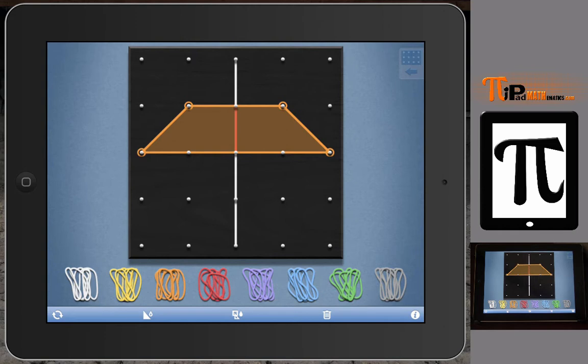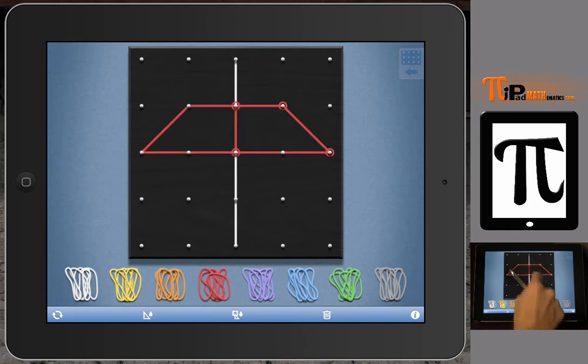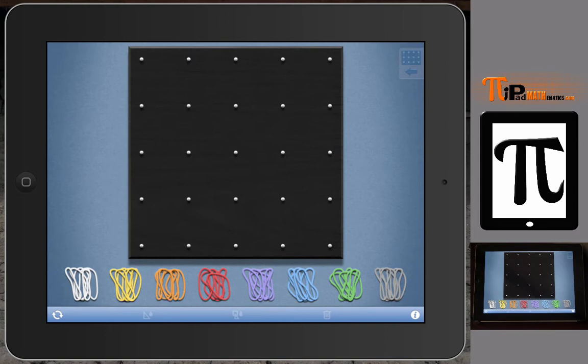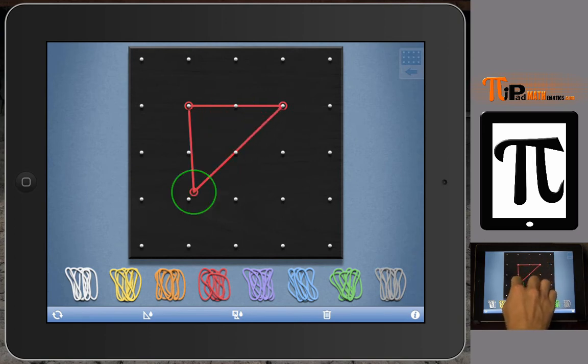What I just did here models reflection of a figure about a line of symmetry. One thing you want to do is have students first understand what it is to be a line of symmetry, a reflection line. Then, given a shape, can they find those lines of symmetry, those lines of reflection?